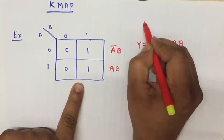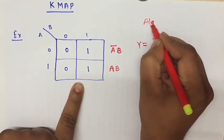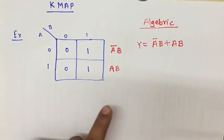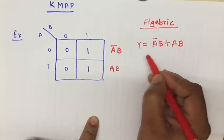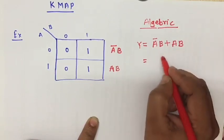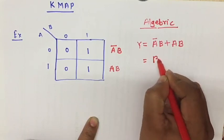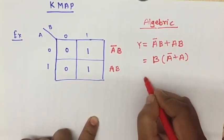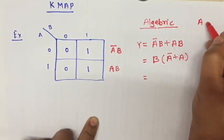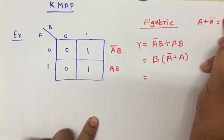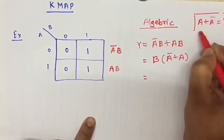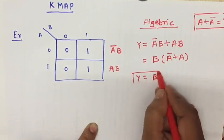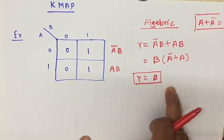First we studied algebraic simplification for reducing any logical equation. If we apply algebraic simplification to A-bar·B + AB, we take the common term B out, leaving B·(A-bar + A). According to Boolean law, A + A-bar equals 1, so A-bar + A also equals 1. Therefore the final simplified equation is Y = B.